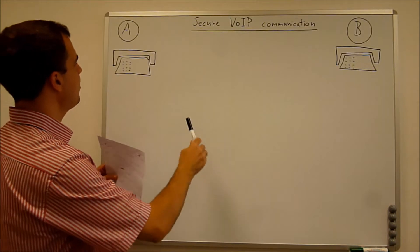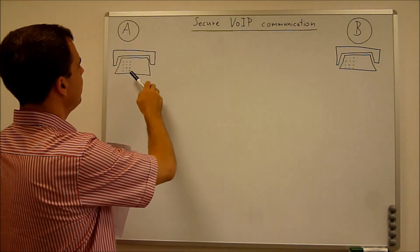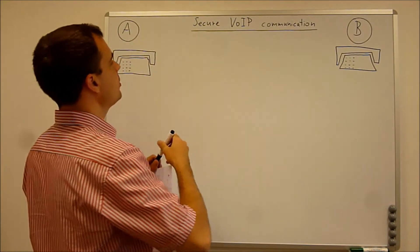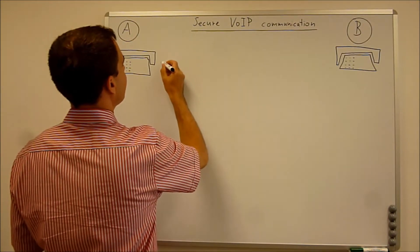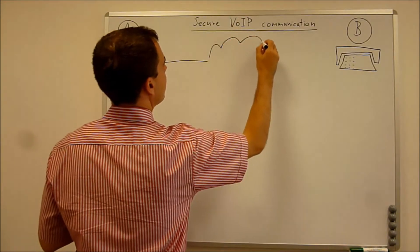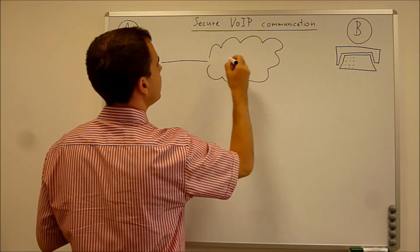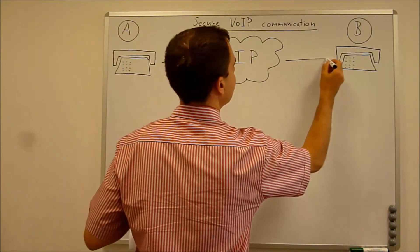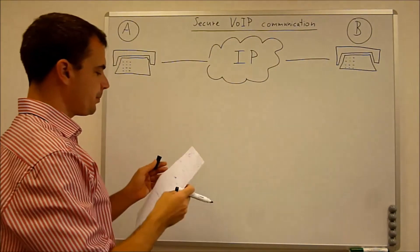So on this whiteboard we have two telephones, telephone A and B, and as both are voice over IP telephones in our example, they are both somehow connected through an IP internet protocol network.